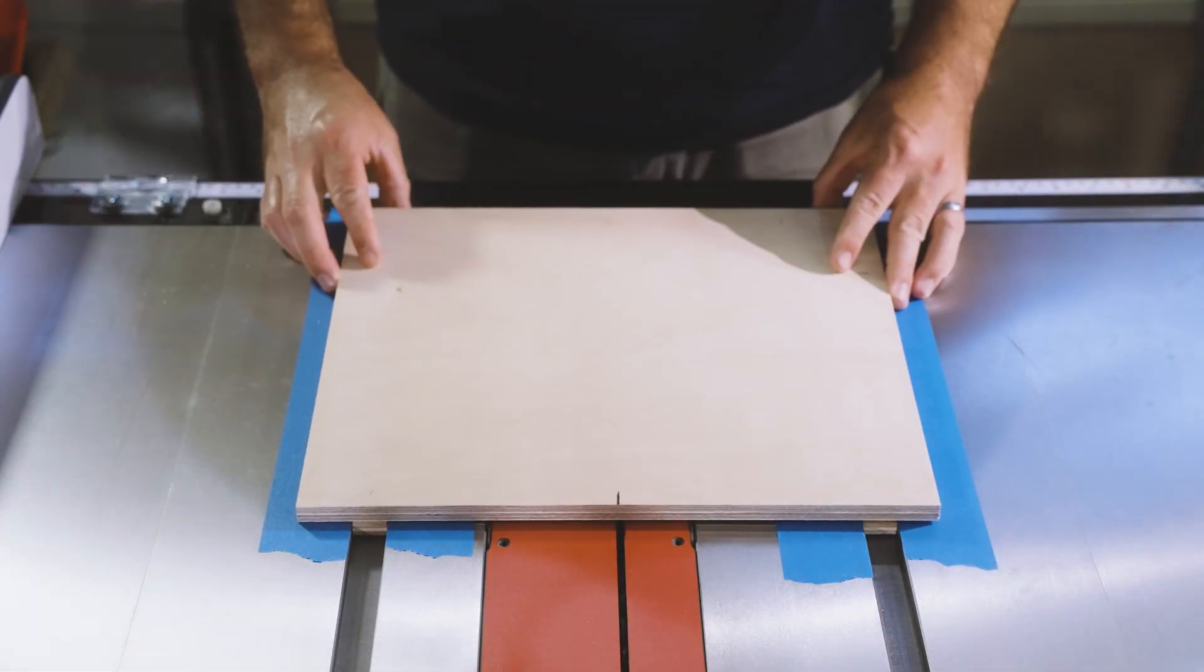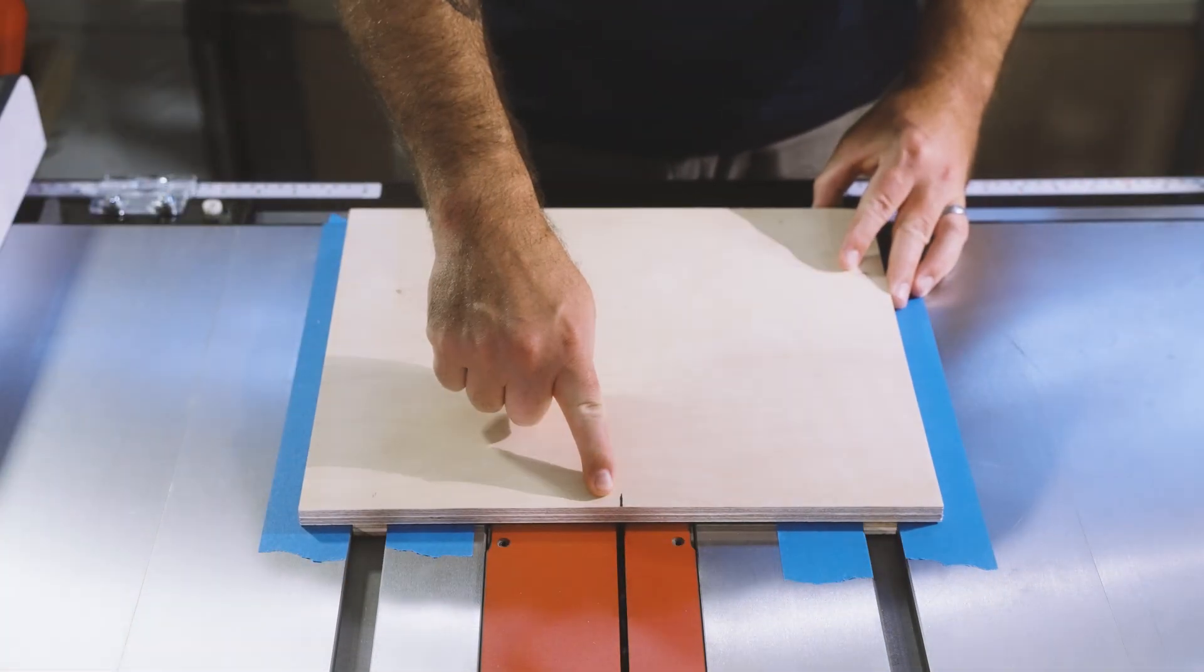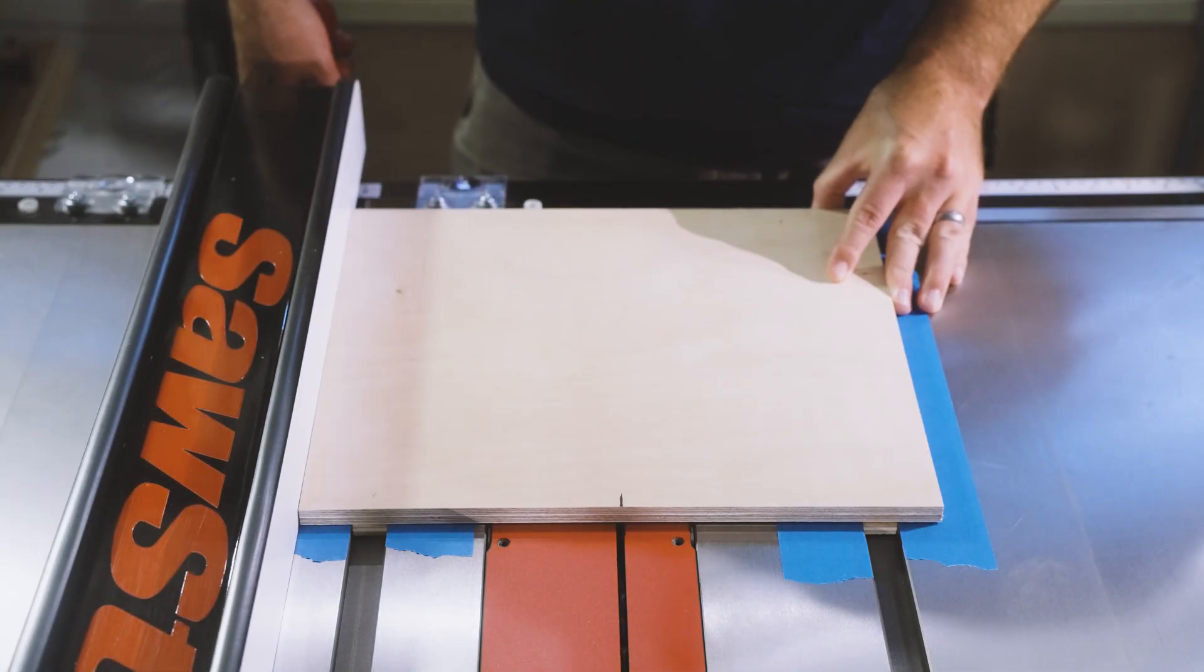Then we're going to line up that mark with the center of the blade on the table saw, and then move our fence up against the bottom piece.